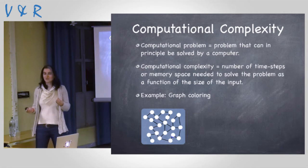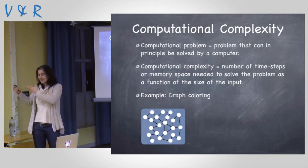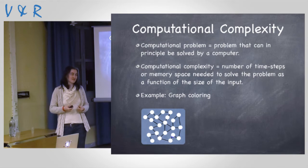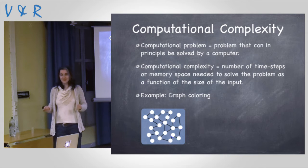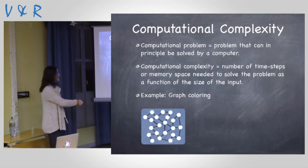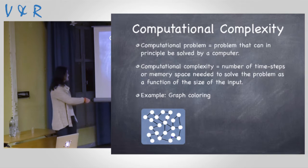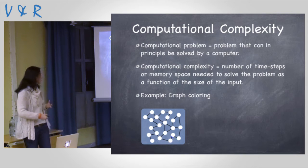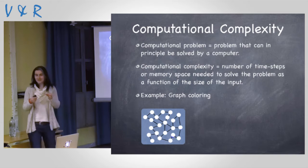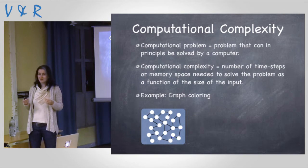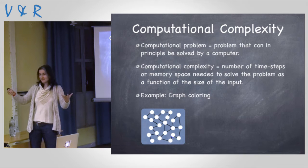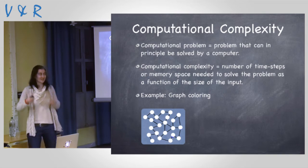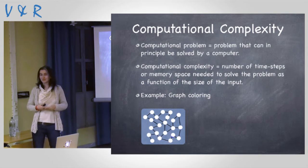What is computational complexity? First of all, what's a problem? A computational problem is any problem that can be solved by a computer. If you ask a computer to find a cure for cancer, that's not a problem that nowadays can be solved by a computer. But if you ask a computer about graph coloring — you make some points and connect them with lines, and tell the computer: I have three colors, can you color the points, each with one color, such that two connected points don't have the same color? Imagine the map of Europe — you want to color countries in different colors but you don't want neighbors to have the same color. That's the kind of application for this problem, and that's a problem that can be solved by a computer today.